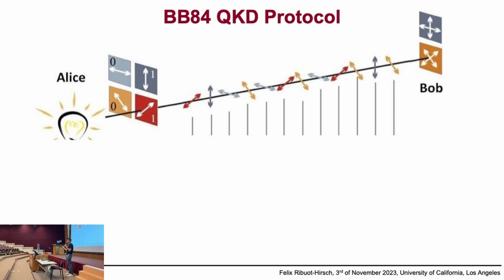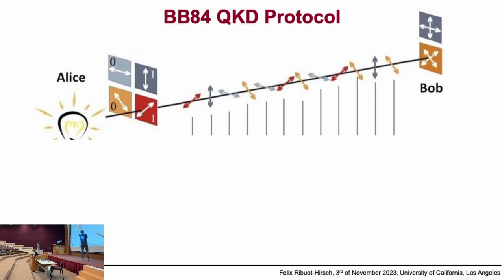The direction of the oscillation of the wave is called the polarization of light. So we can encode information in the polarization of light. This is what we're doing. So we have Alice and Bob — you know they've been around. We send photons that are encoded in different directions: vertical photons, horizontal photons, diagonal photons, and anti-diagonal photons.